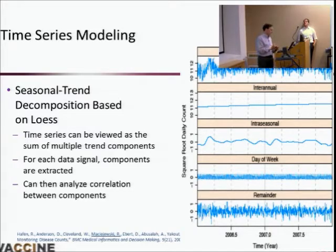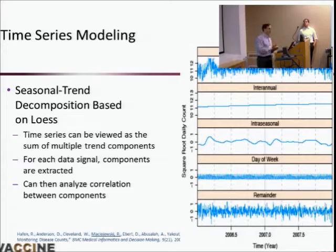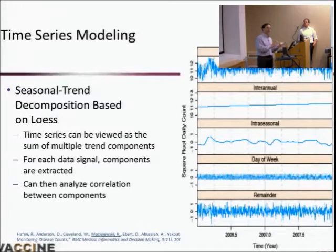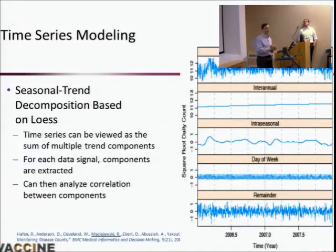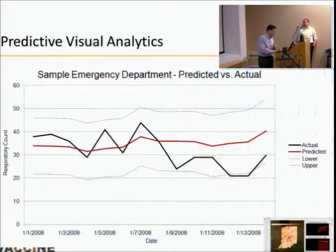It works pretty well for other types of data — it works really well for crime data as well as health data. There are even people doing epidemiological criminology as a field of research, because they think crime spread and crime patterns are similar to disease patterns. That may be an emerging new field.